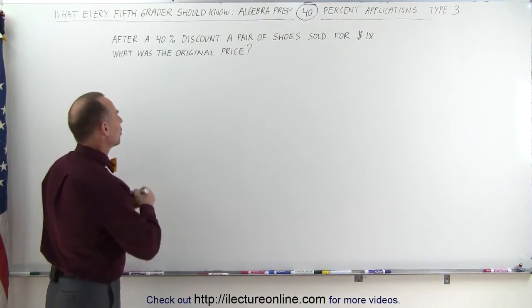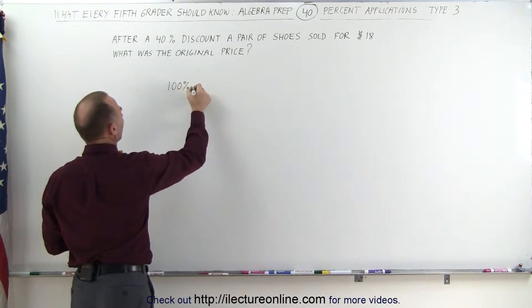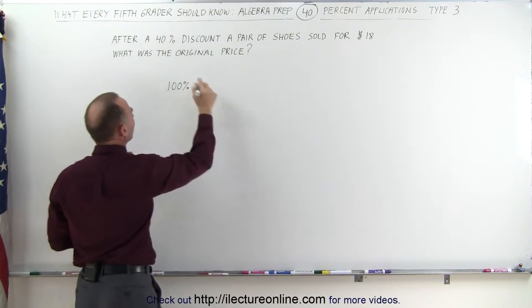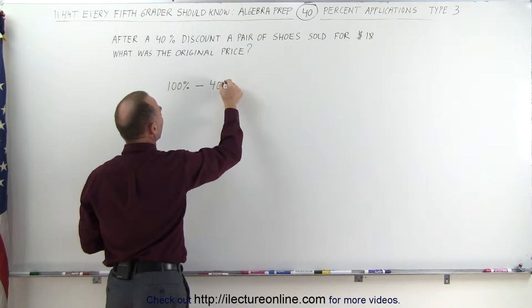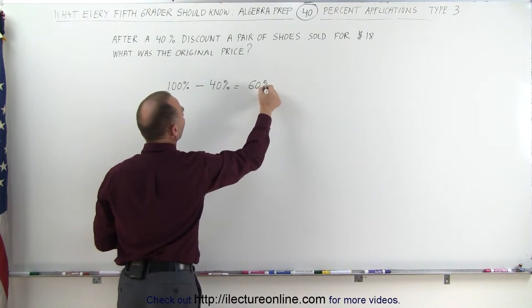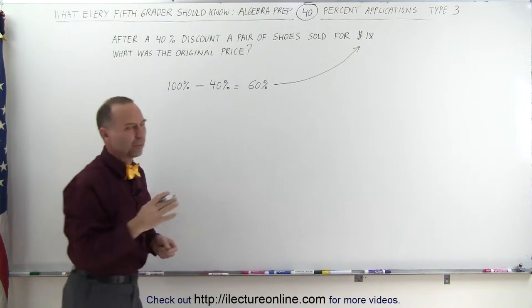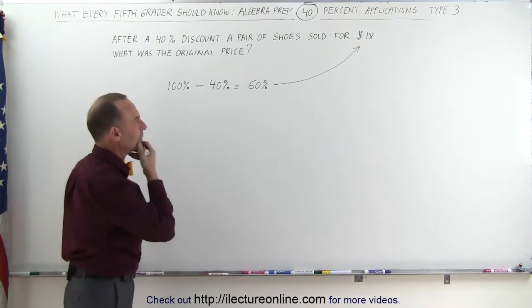Okay, let's see. So the original price was 100%. We subtracted from that 40%, and that means we ended up with 60%. And 60% is the sale price. 60% of the original price is the sale price.